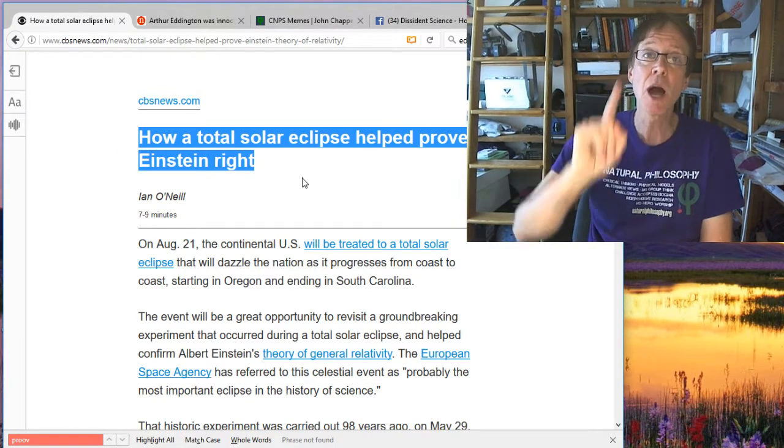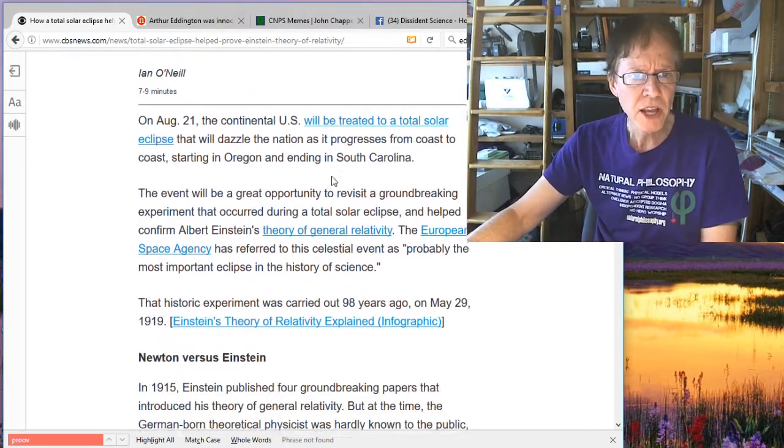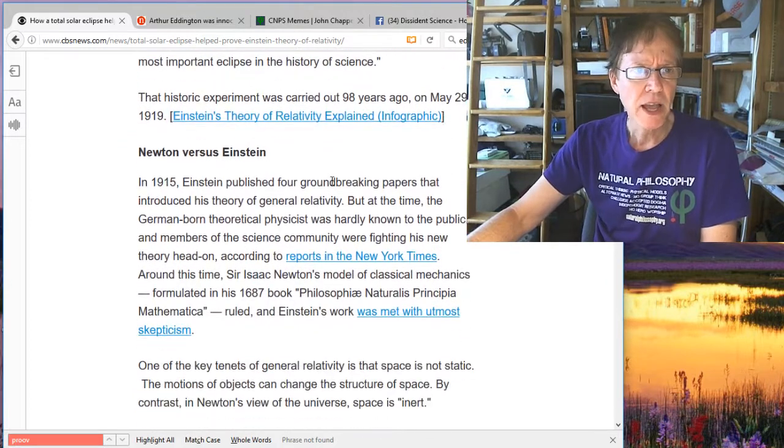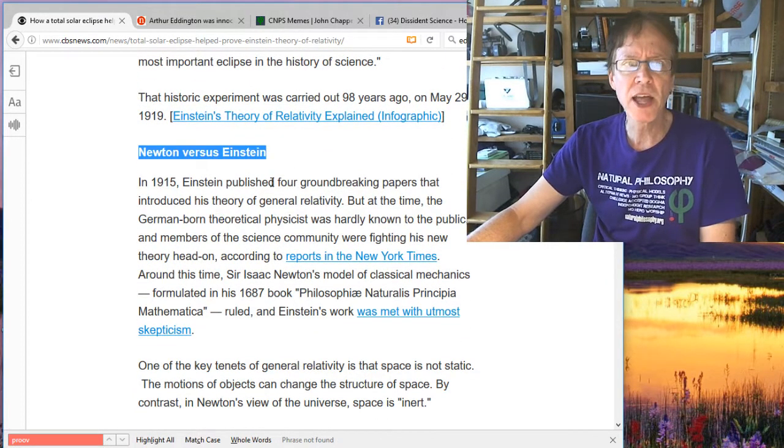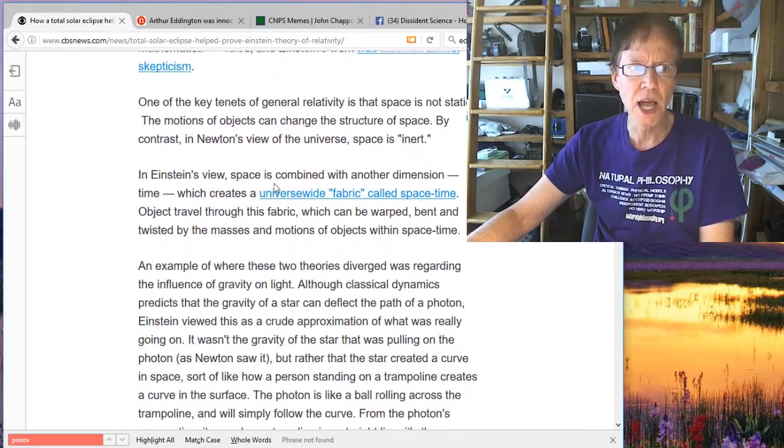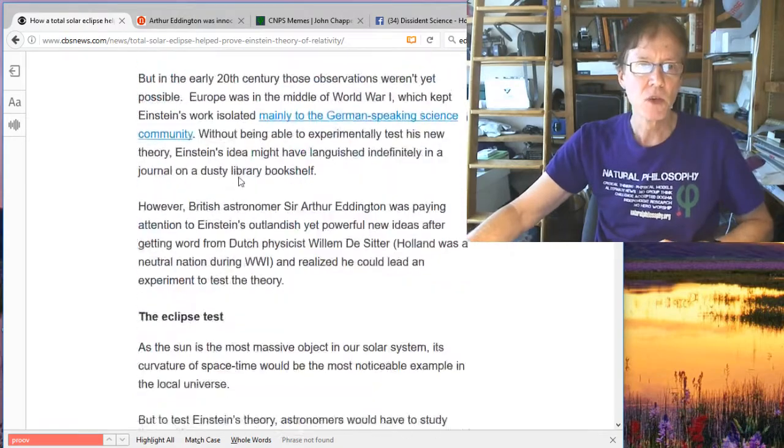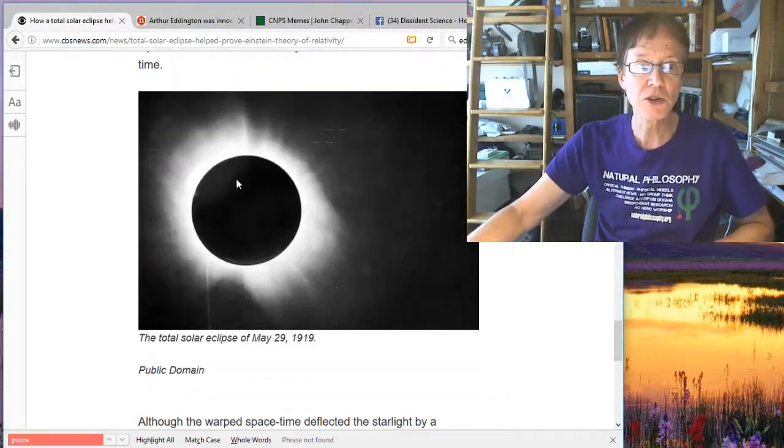There's a solar eclipse coming August 21st on my father's birthday here across the United States, and so it's sort of a topical thing, and they're talking about Newton versus Einstein, and that is Newton just talked about gravity. He didn't talk about gravity bending light, and of course the big time, what made Einstein famous was this eclipse, this picture that you see right here.